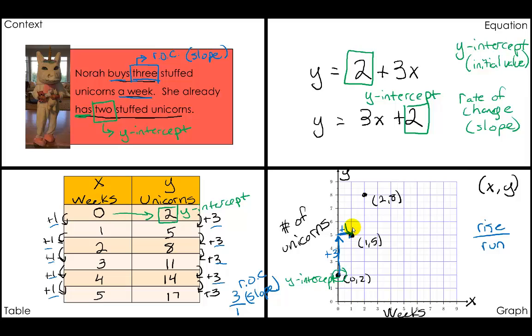Once again, we're going up 1, 2, 3, up 3 to go over 1. So we're rising or going up 3 to move 1 to the right. And this 3 over 1 is our rate of change or our slope.